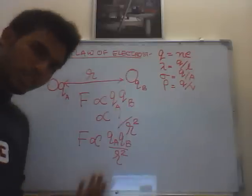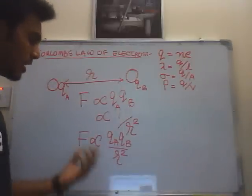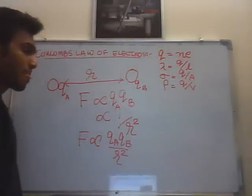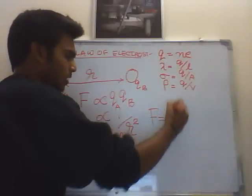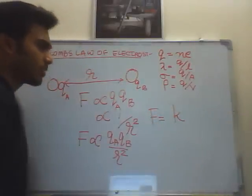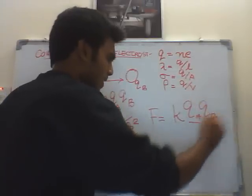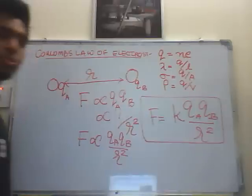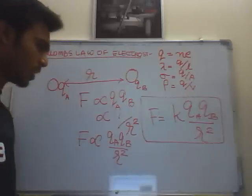Now, when we want to get an equation out of a proportionality, we have to equate it to a constant times that, right? So, that's it. We have our equation, which is F equal to K, which is a constant, QA, QB by R squared. This is Coulomb's law of electrostatics. That's it. That's the derivation.